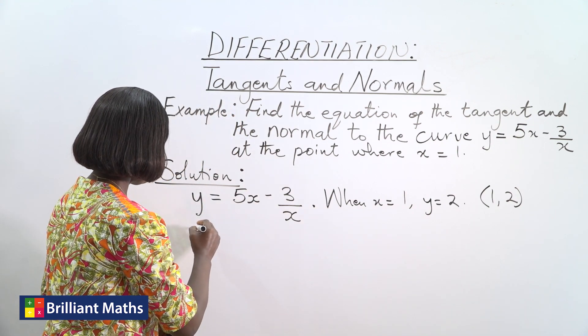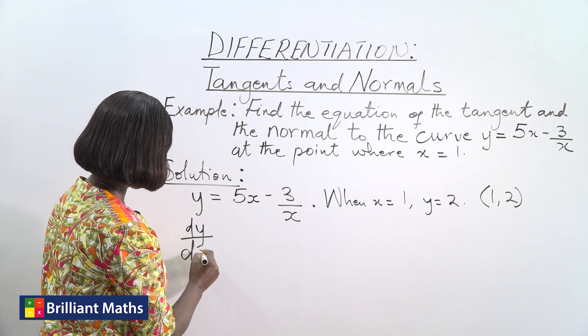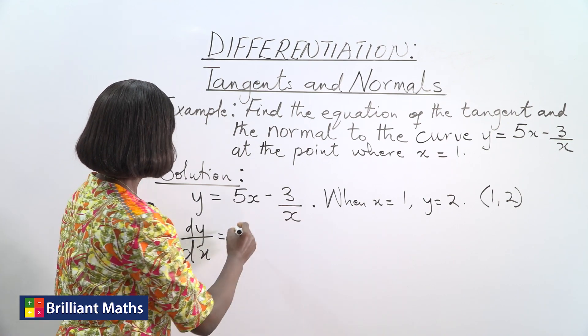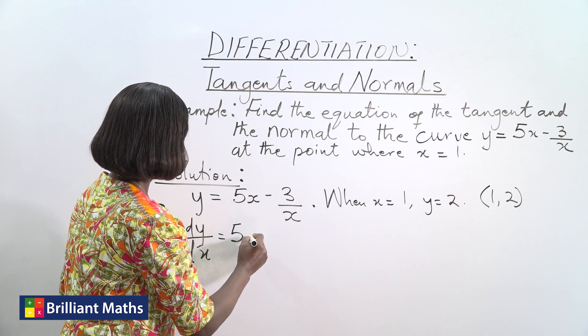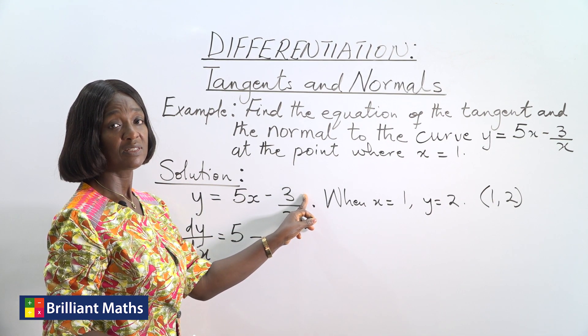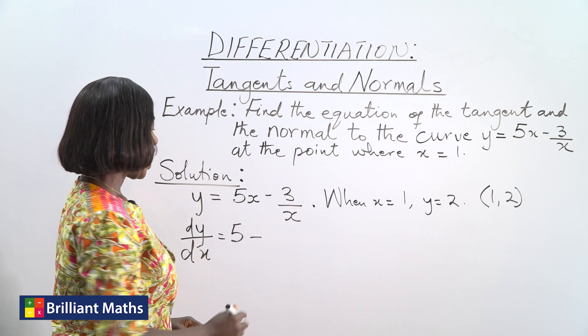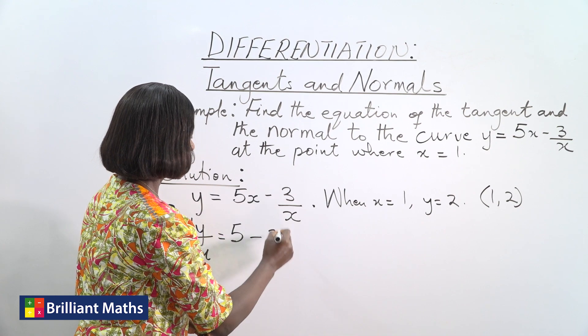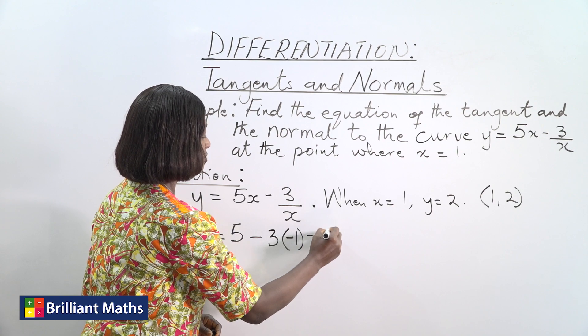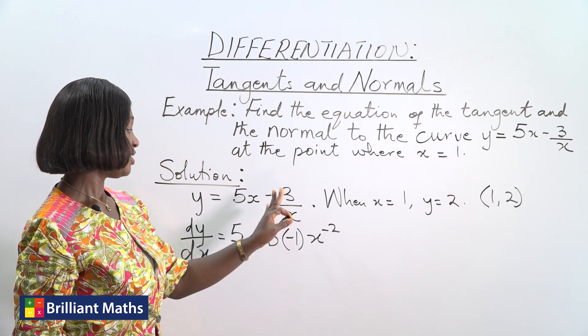So the next step, our dy/dx is the gradient, which will be 5 minus... If I take that up, it will be x^(-1). So by the time I differentiate, I would have 3 times -1, x^(-2). I hope you can see that. I skipped a step there, but I hope you understand.